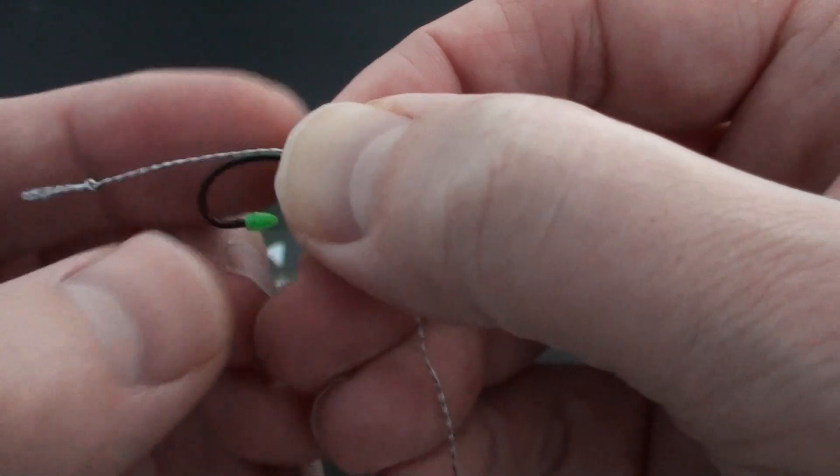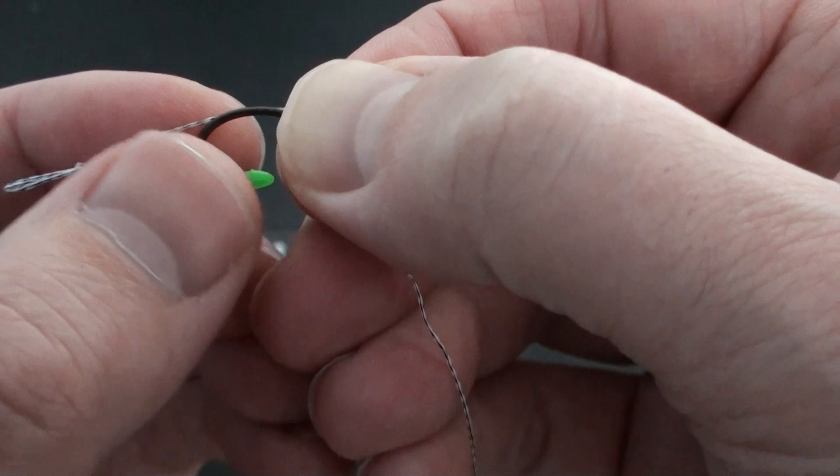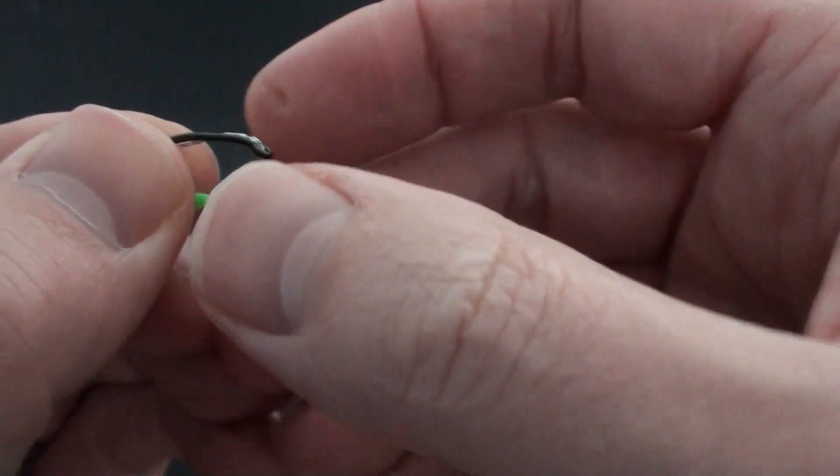So then take the end of the hair and the end of the hook again between your thumb and first finger, trapping it nice and tight.